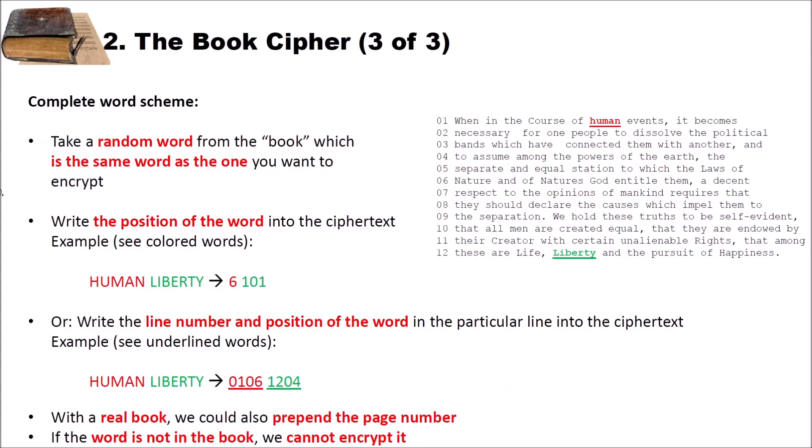Now let's have a look at the complete word scheme. Complete word scheme means instead of encrypting single letters, we encrypt complete words. Clearly, we can only encrypt words with this text here that appear in the text. And we do so by taking a random word from the book, which is the same word as the one we want to encrypt. And then we write the position of the word into the ciphertext. For example, we want to encrypt human liberty. So we search in our text the word human. When we find it at different positions, we take one of the positions and write this into our text. In this case, we have the sixth because human is the sixth word here. And then liberty is the 101st word here. So we write 101.